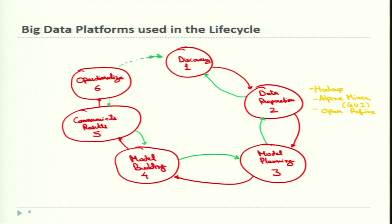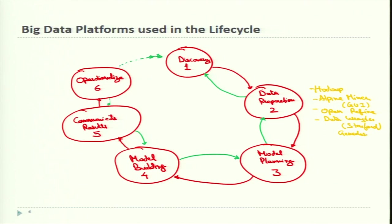Data Wrangler is an interactive tool for data cleansing and transformation, developed by Stanford University. It can perform many transformations on a given data set, and the results can be output as Java or Python code. A key advantage is that a subset of data can be manipulated through its GUI and the same operations are automatically written out as Java or Python code.